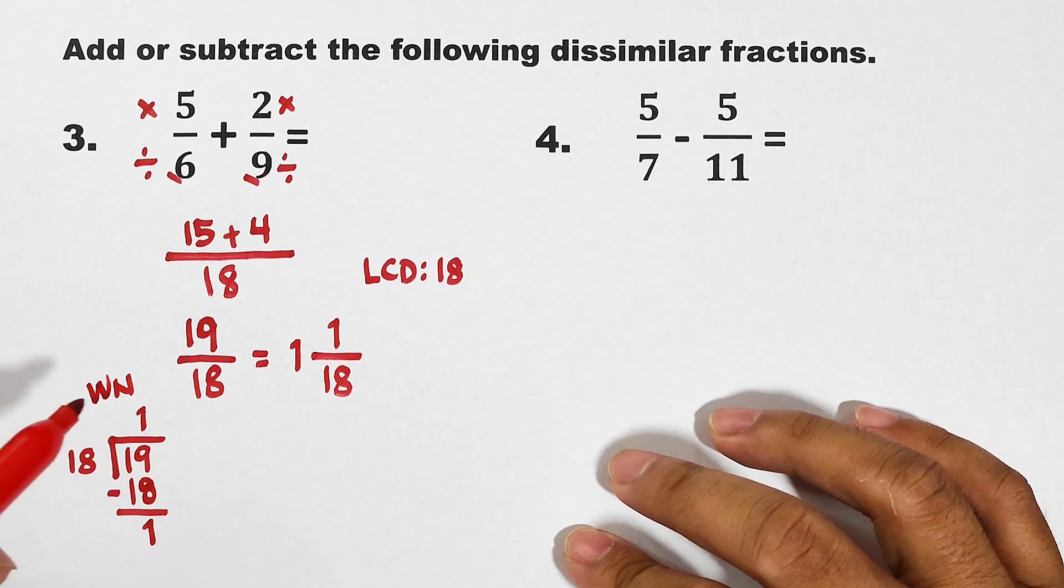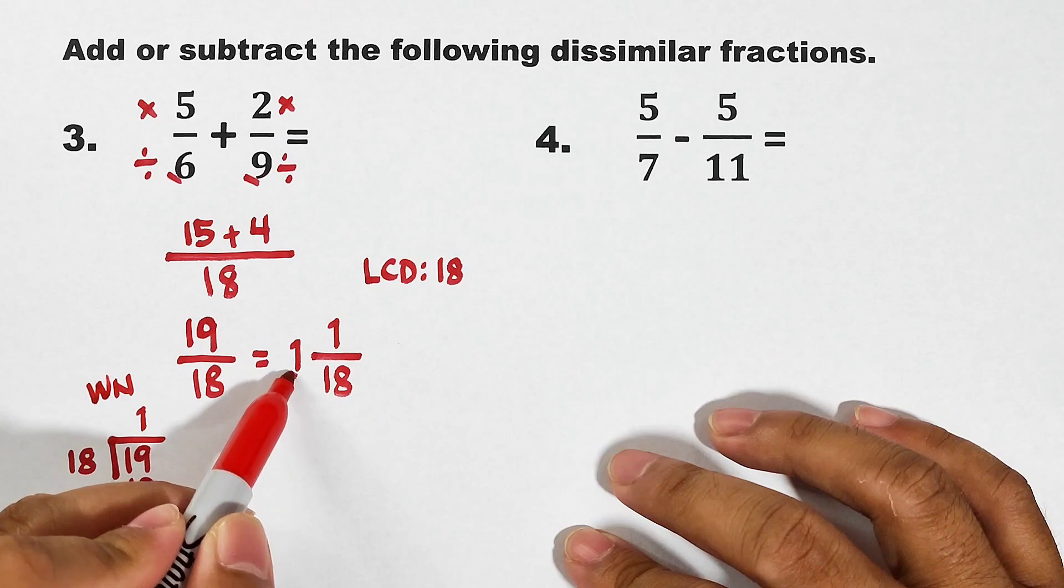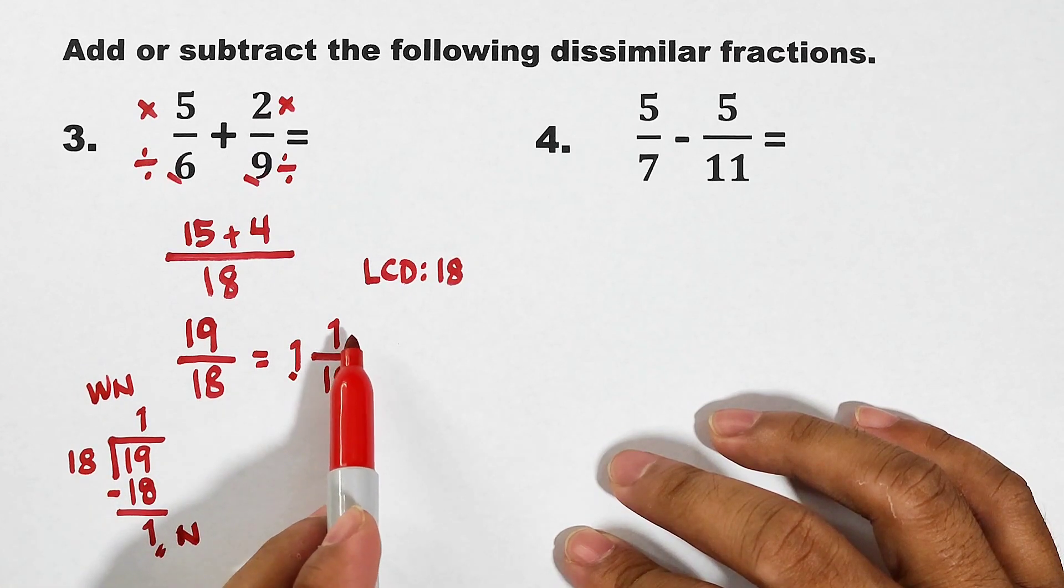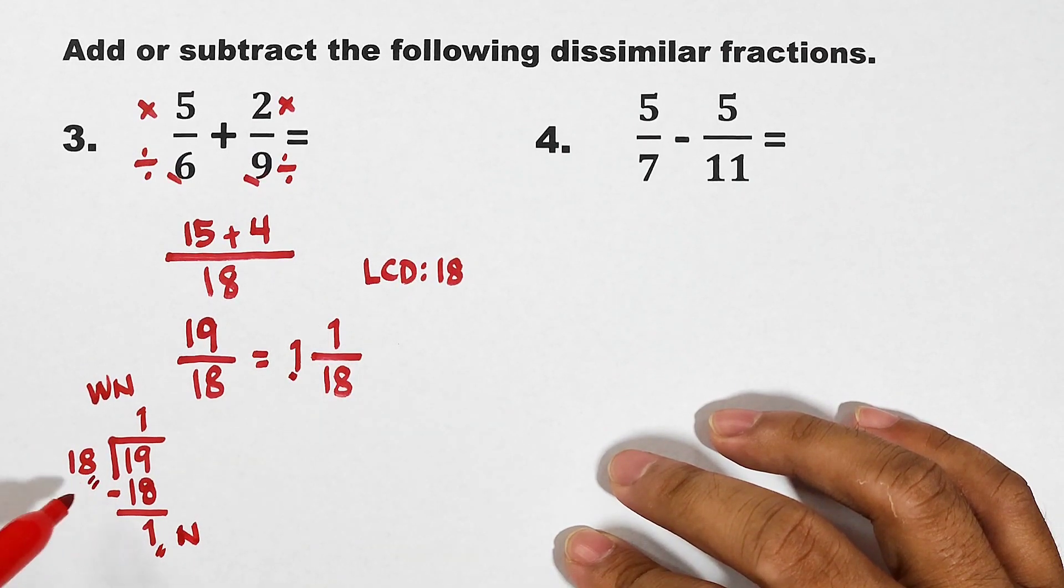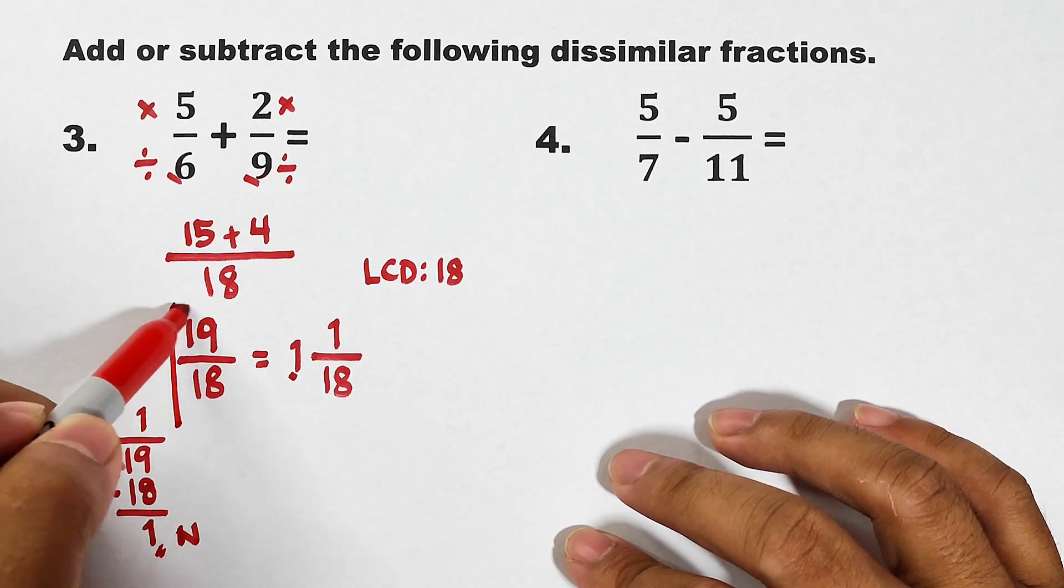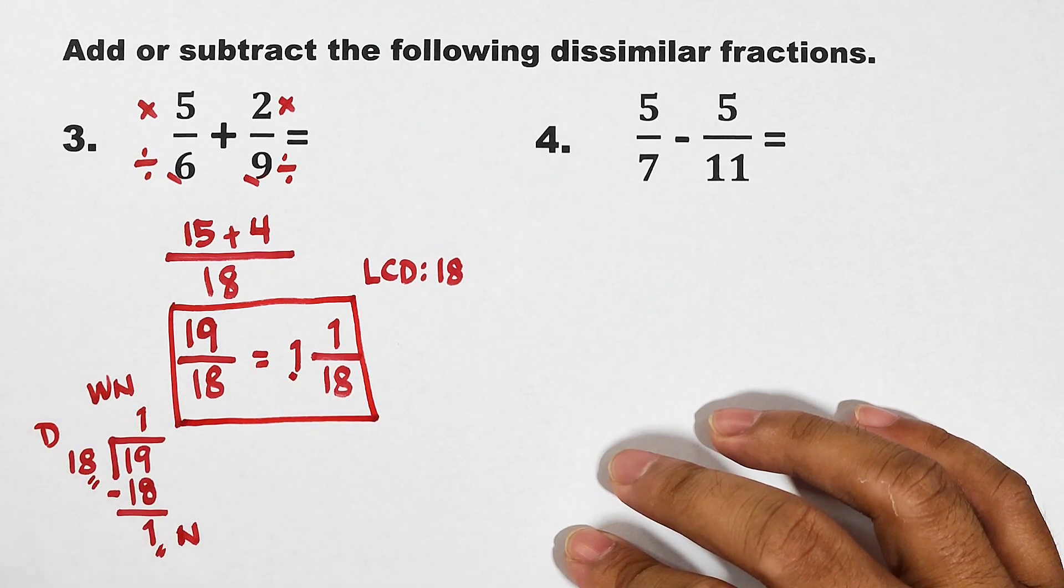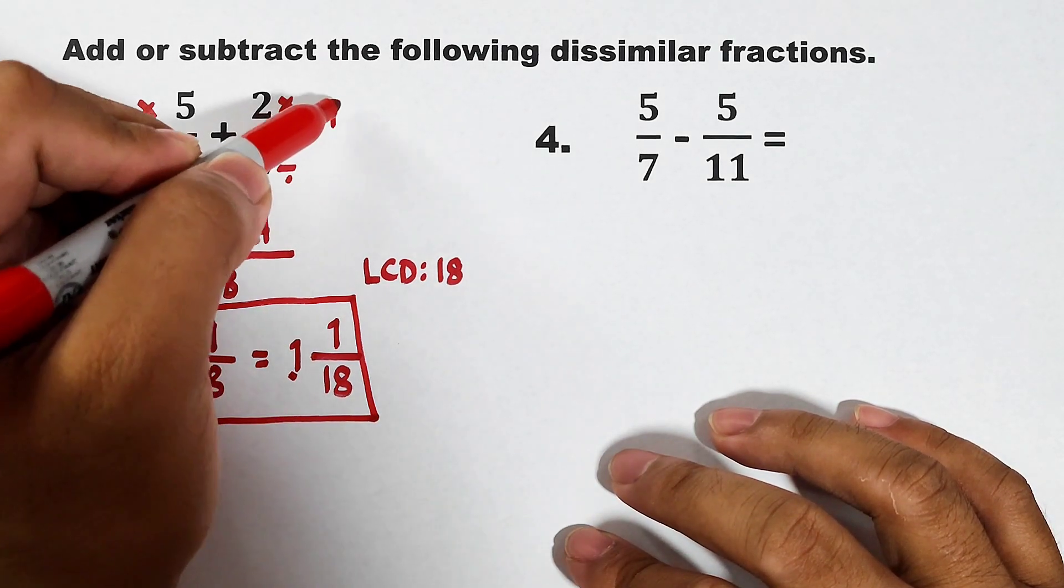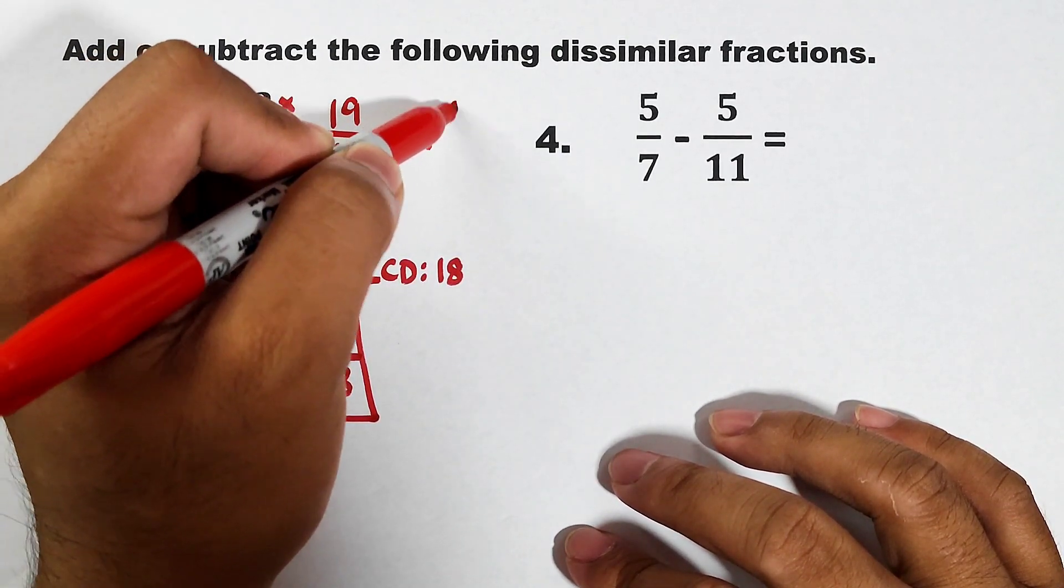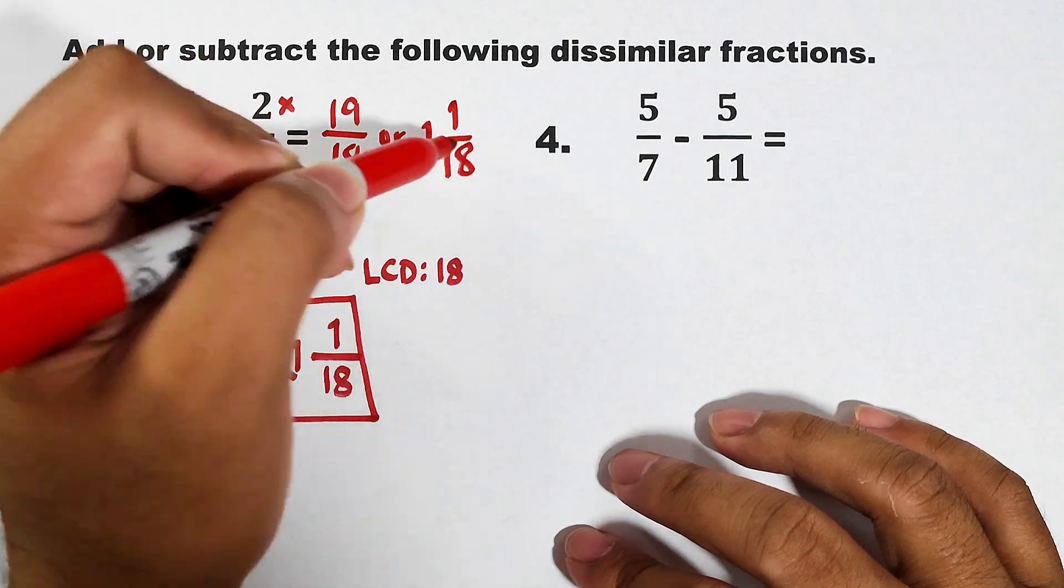Yan. Sorry for that. This is the whole number. Ito sya. Next, itong remainder natin dito will be your numerator. And lastly, your original divisor is still your denominator. That's why meron tayong sagot ditong 19 over 18, saka 1 and 1 over 18. So, 19 over 18, or 1 and 1 over 18.